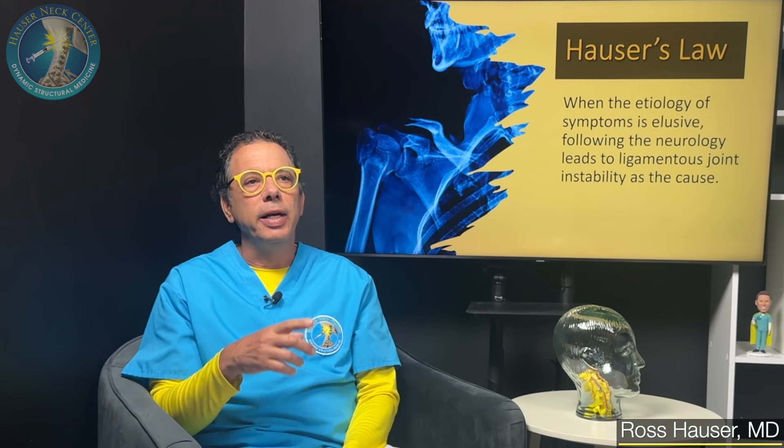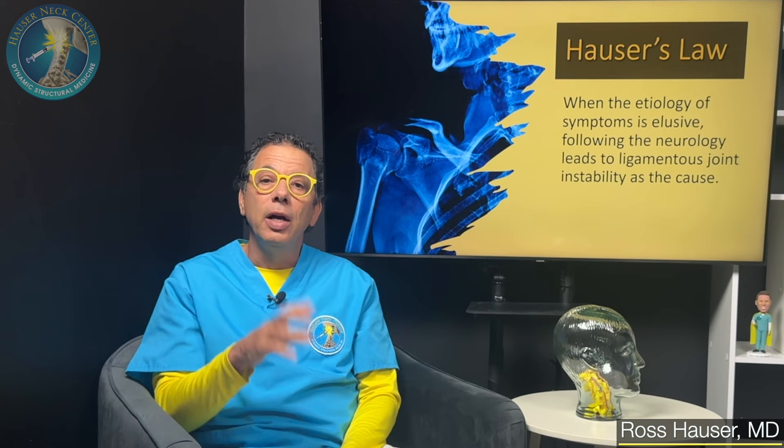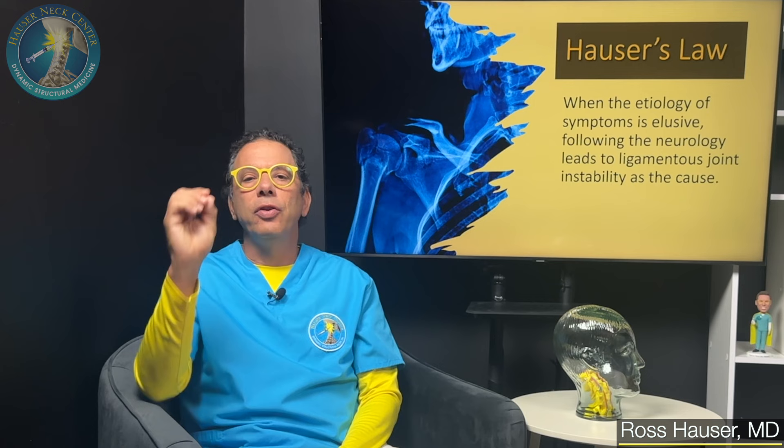In science there are different principles. The main principle we're going to talk about today is Hauser's Law. Hauser's Law is: when the etiology of chronic symptoms is elusive, if you follow the neurology, the neurology will lead to ligamentous joint instability as the cause. I'm going to go through different case scenarios of how you apply Hauser's Law. Please comment below with any symptom you can't figure out and I'll try to help.